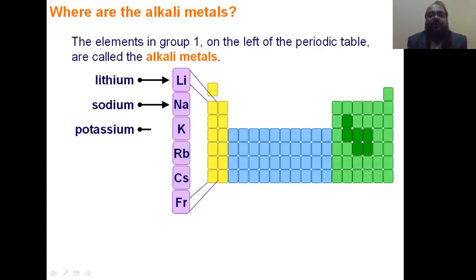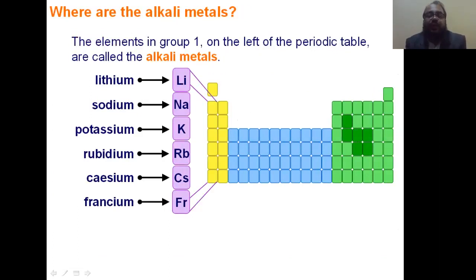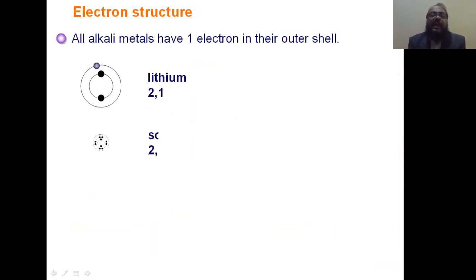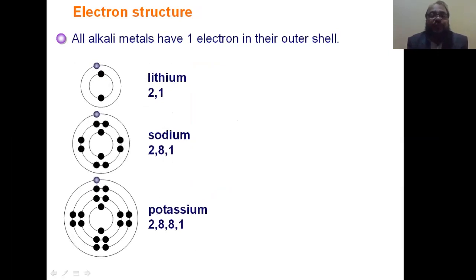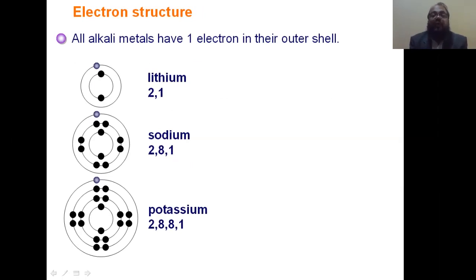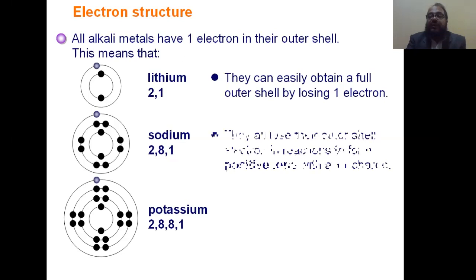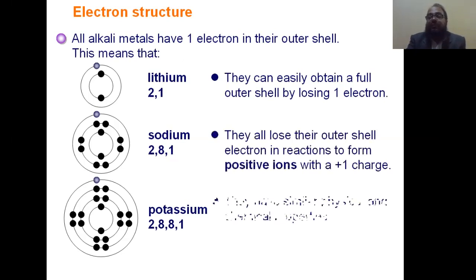The first element of the first A group is lithium, second is sodium, then potassium, rubidium, cesium, and last is francium. All the alkali elements have one valence electron. The electronic configuration of lithium: it has two electrons in the first shell and one electron in the outermost shell. Sodium, atomic number 11, has two electrons in the first shell, eight in the second shell, and one electron in the outermost shell. Potassium and all other elements of the same group also have one electron in their outermost shell. Due to the same number of valence electrons, they all form positive ions with a +1 charge.